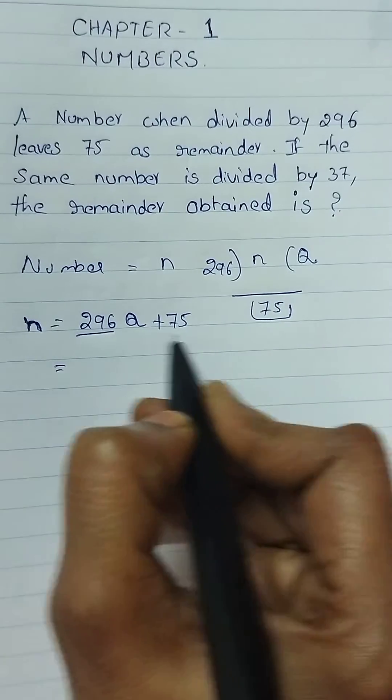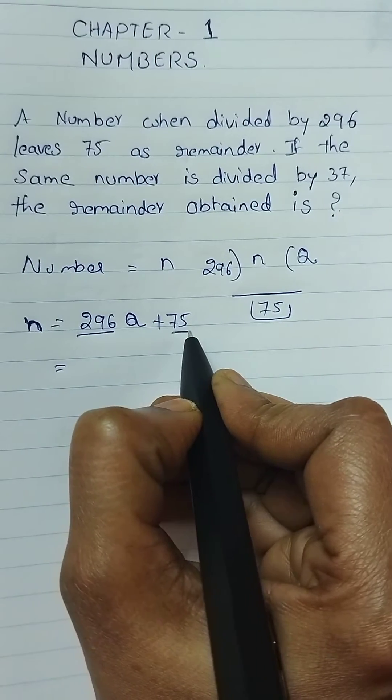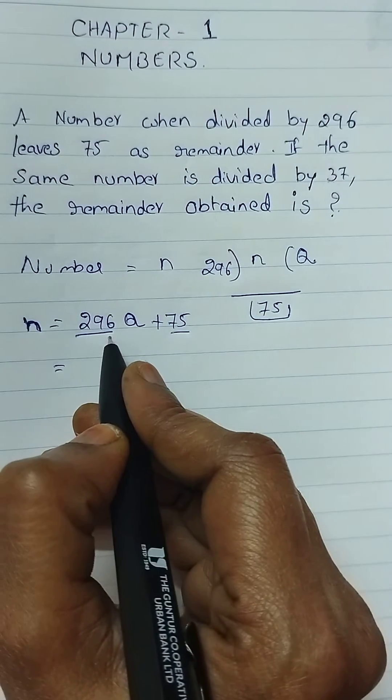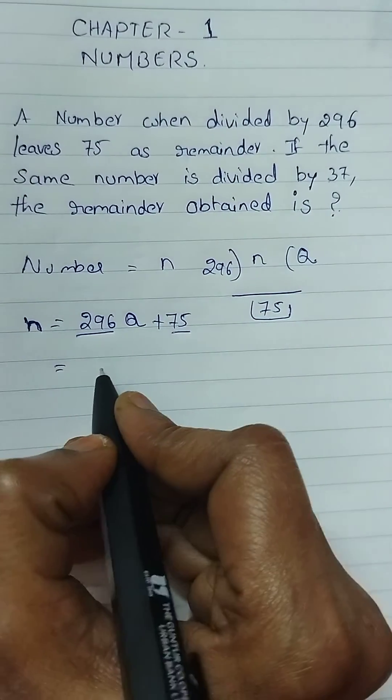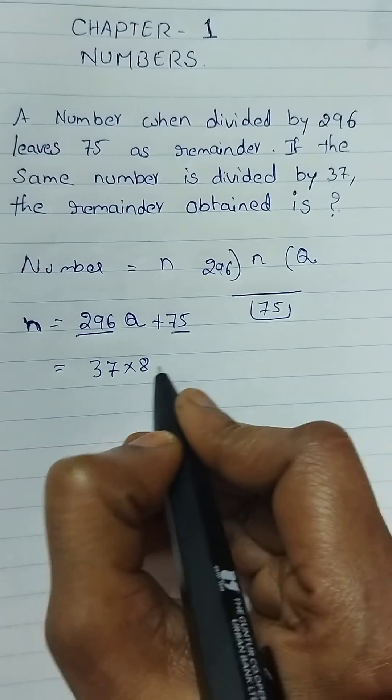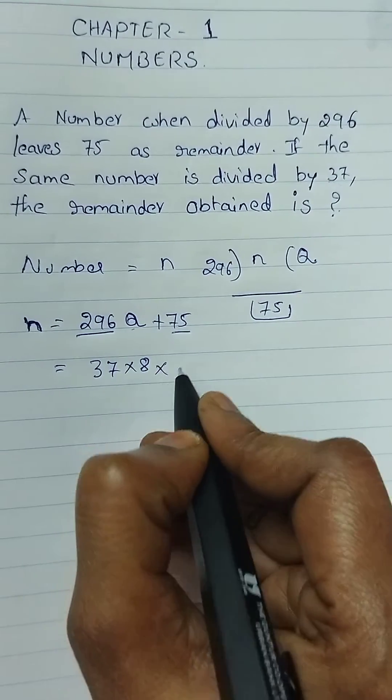If the same number n, that is 296q plus 75, is divided by 37, what is the remainder? So now we have to split 296 and 75 in terms of 37.